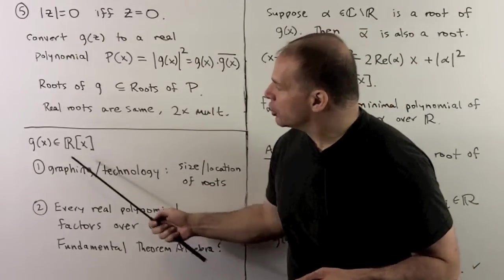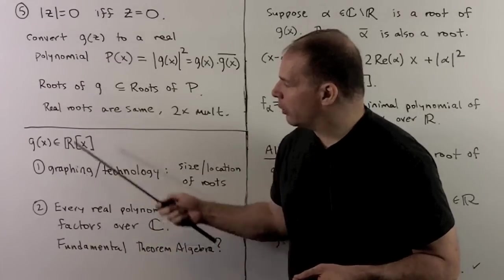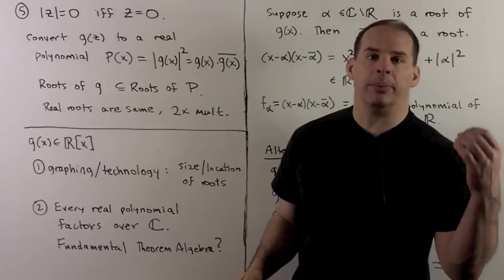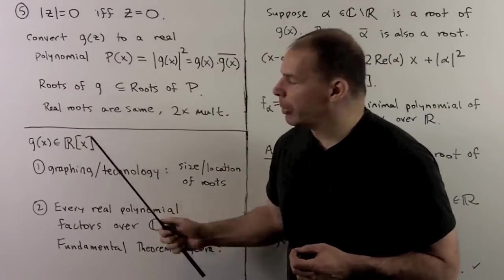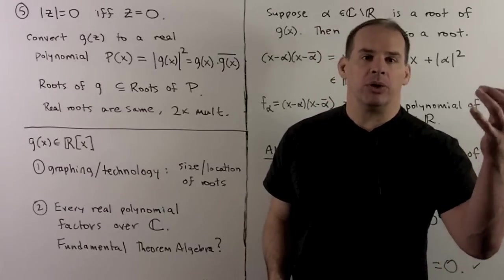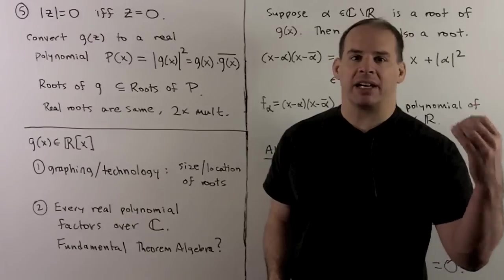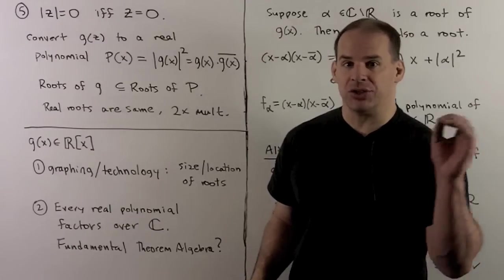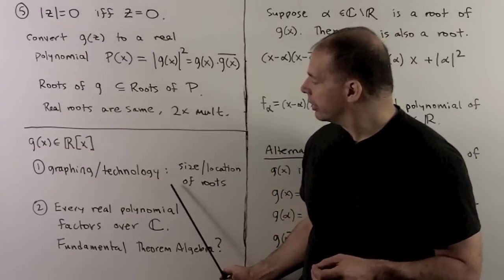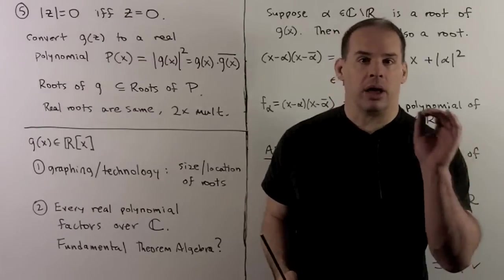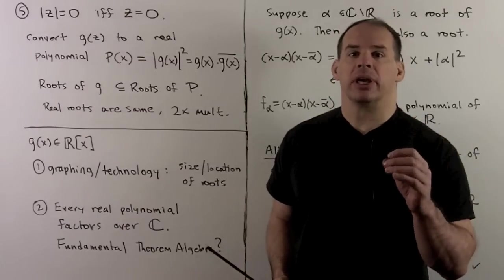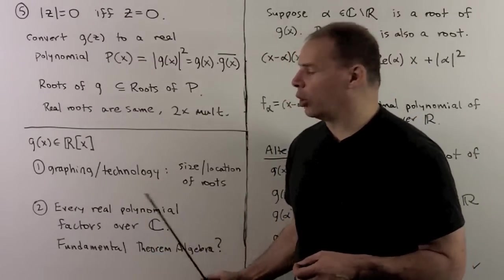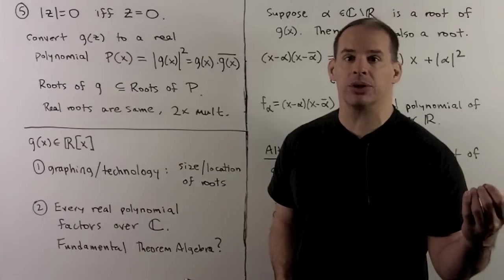Moving on to real polynomials: with real polynomials, we can use methods for graphing and technology to get an idea of the size and locations of the roots. Another tool is that we can still apply the Fundamental Theorem of Algebra — every real polynomial will factor over the complex numbers.